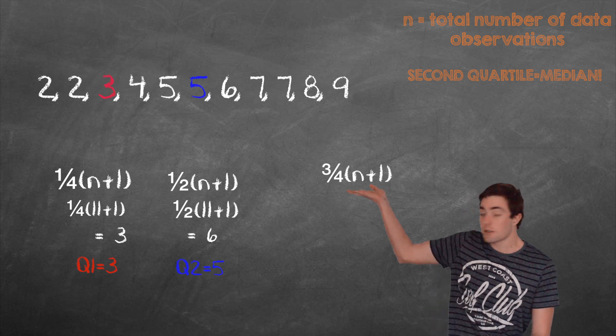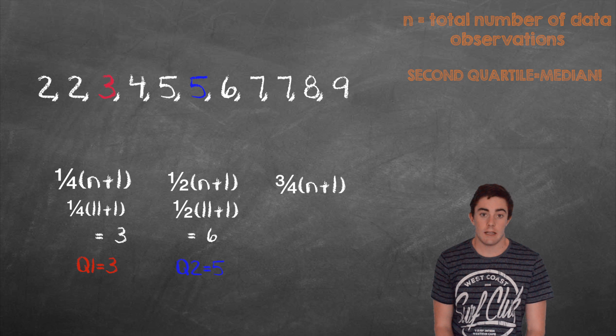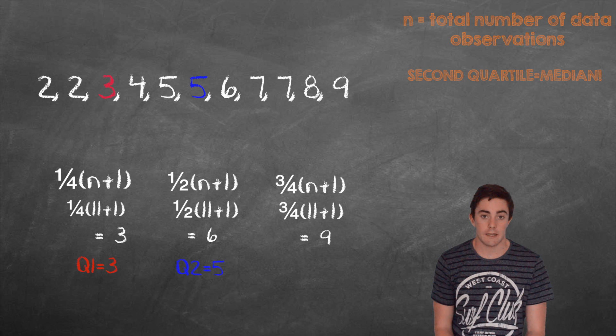To find the third quartile, we will use this formula. If you substitute 11 for n, you will find that it equals 9. If we look at the ninth data observation, you will see that it equals 7. Therefore Q3 equals 7.